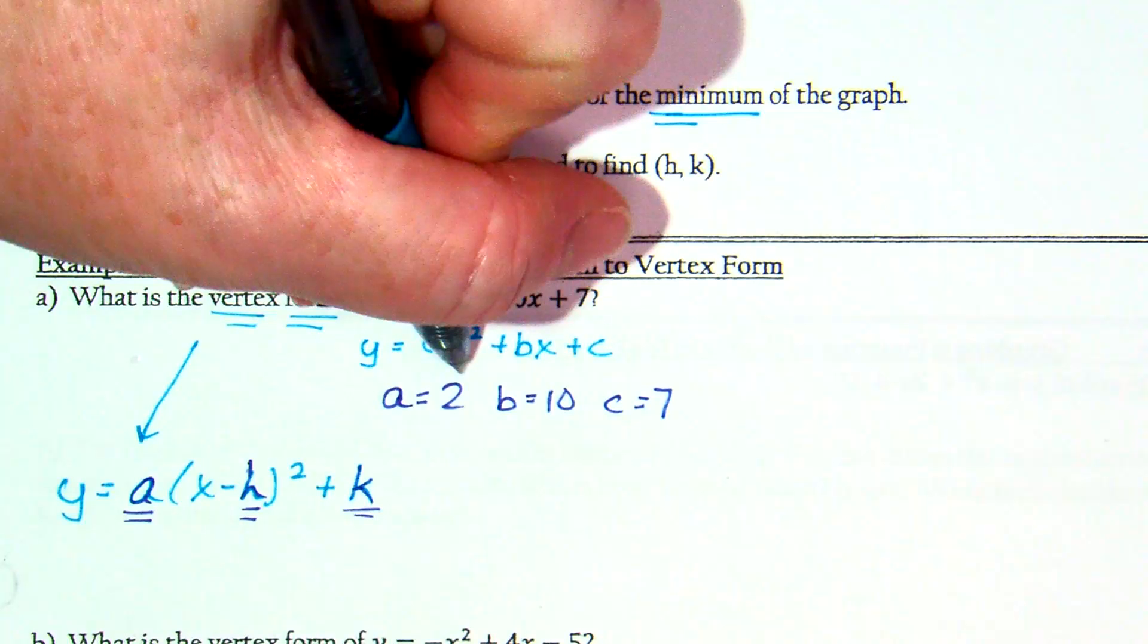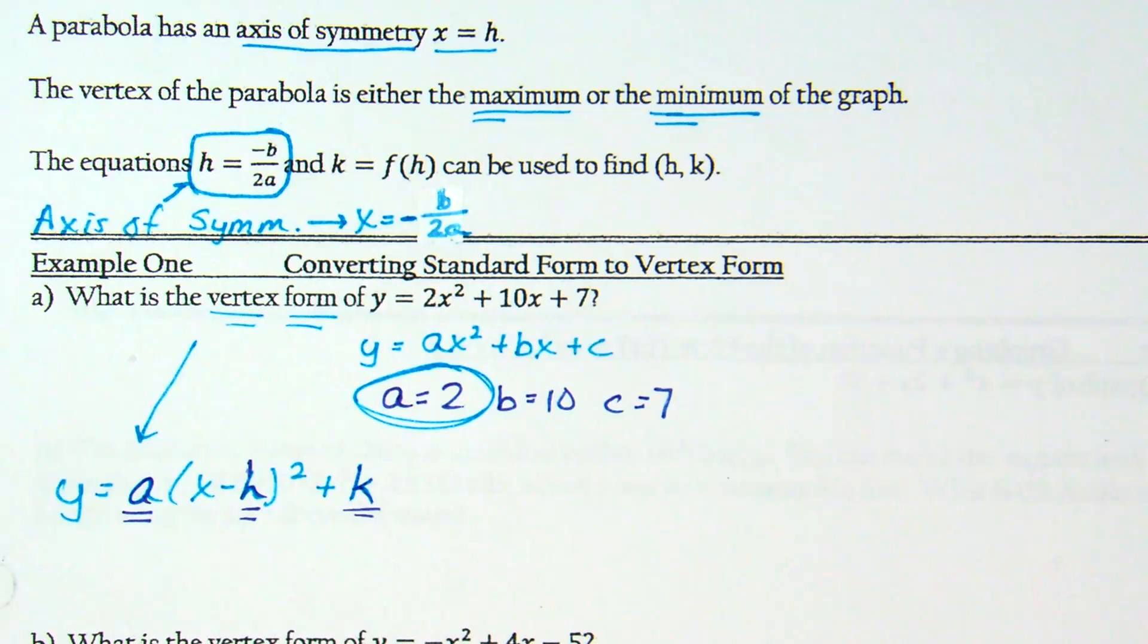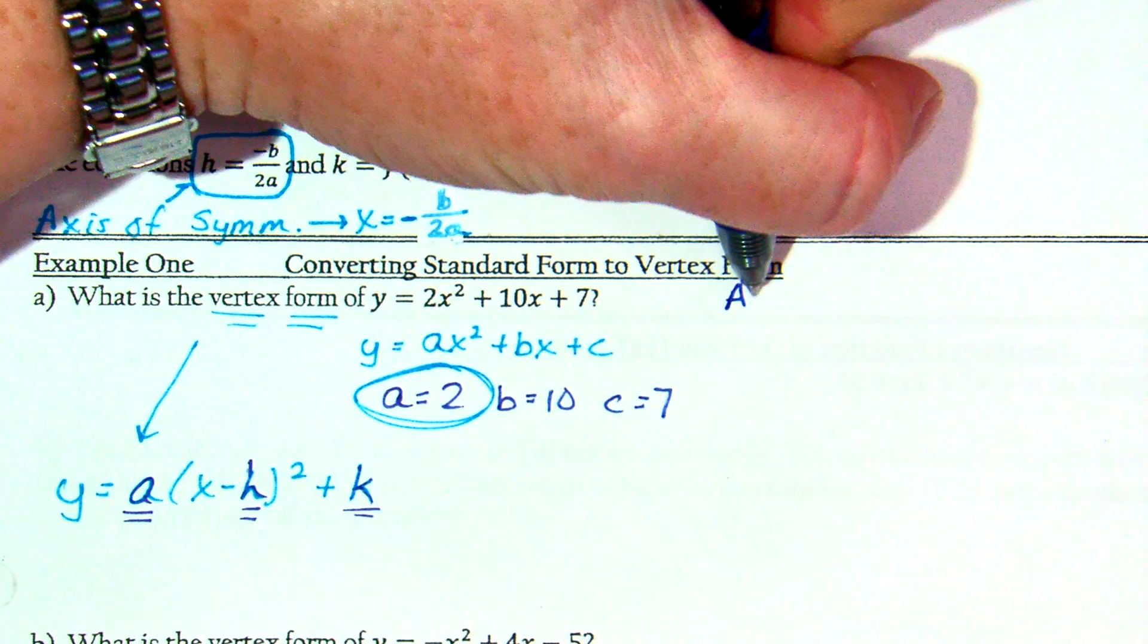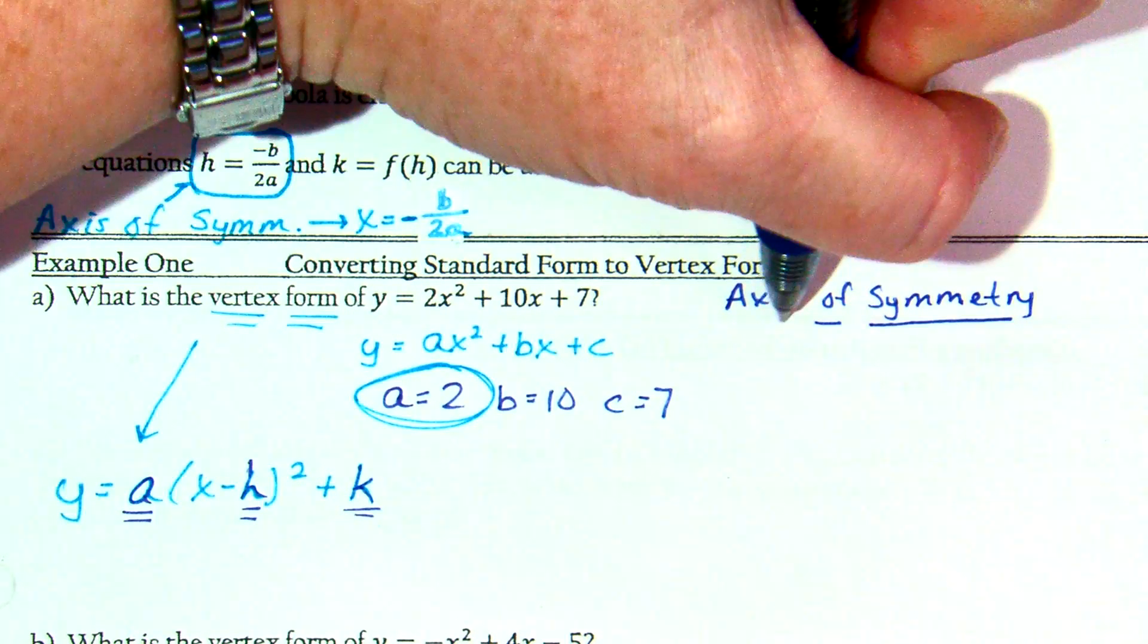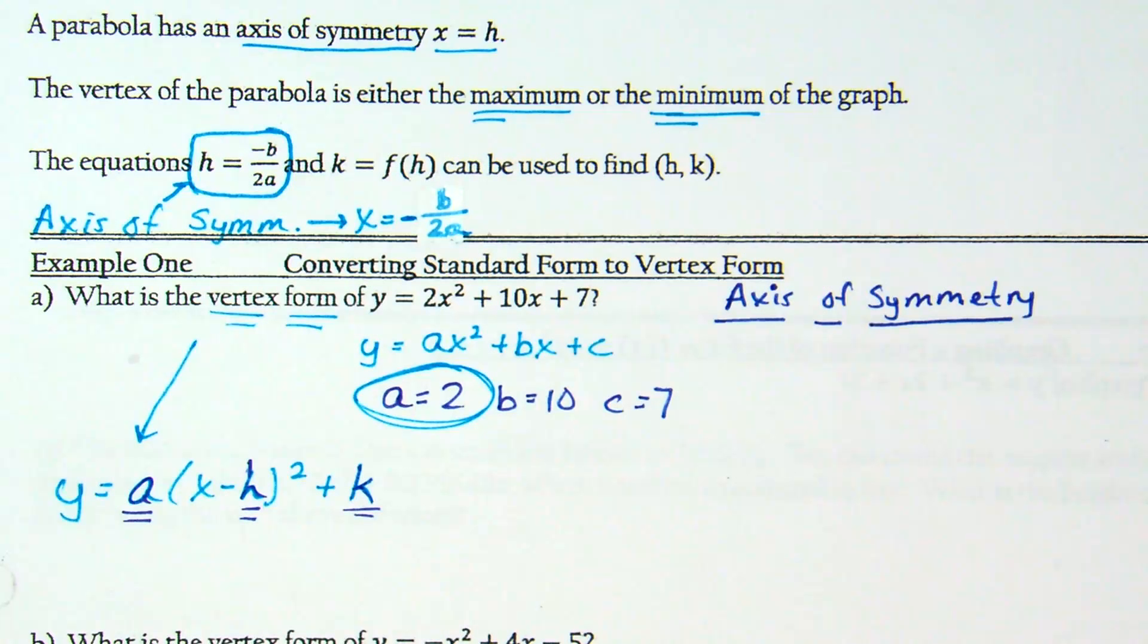We have to know three things to fill in vertex form: A, and then h and k. What do we already know? We know A. On this type of problem when you're given standard form, A was the more difficult thing to find yesterday. Today, A is given. A is 2 because it's the coefficient in front of x squared.